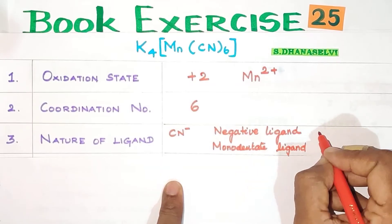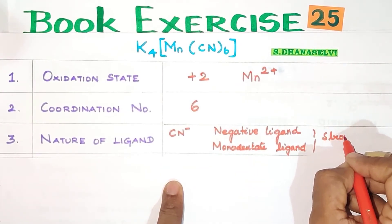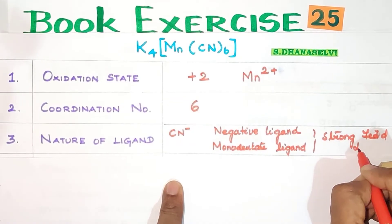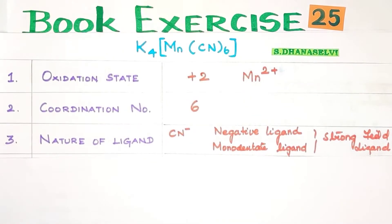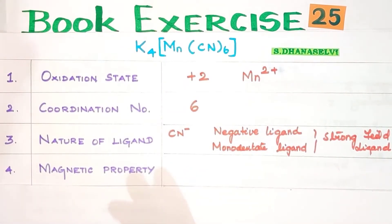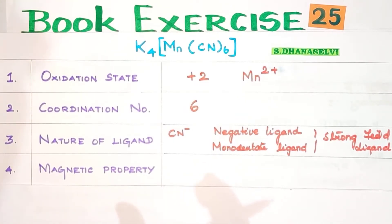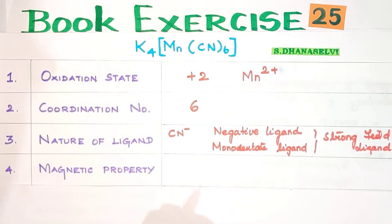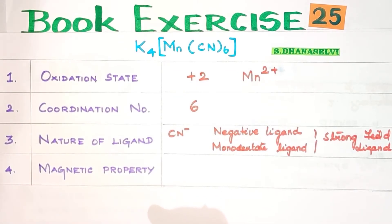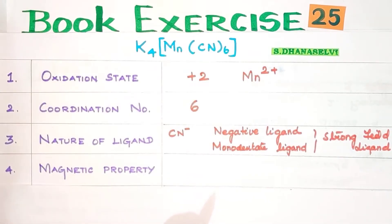The cyanide ligand is a strong field ligand. Now for magnetic property: we need to determine whether K4Mn(CN)6 is a diamagnetic or paramagnetic substance. This depends on whether the compound has unpaired electrons, because unpaired electrons lead to paramagnetic behavior. To determine this, we need the electronic configuration of the central metal atom.